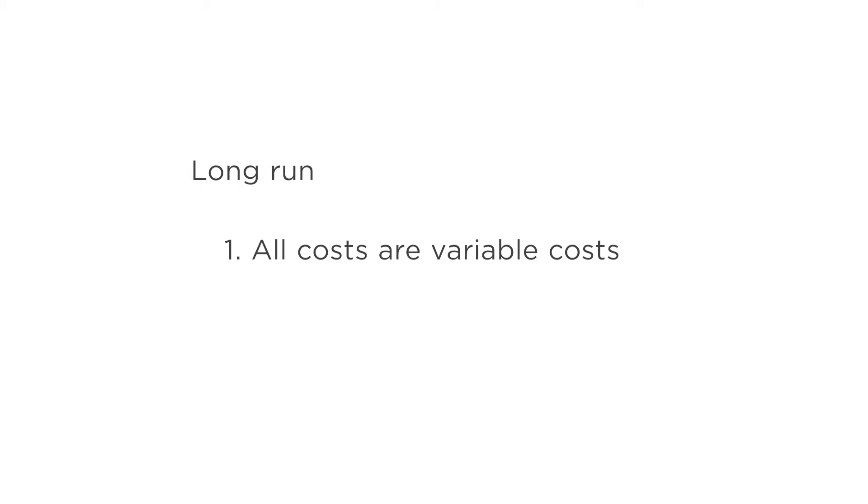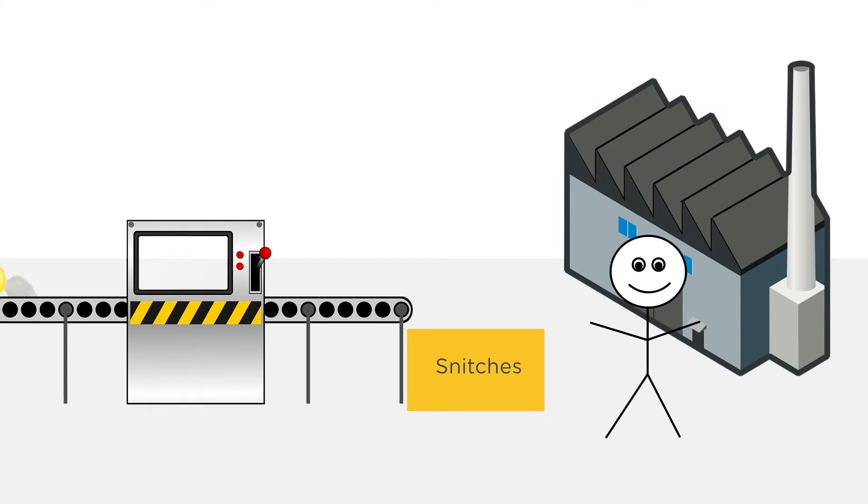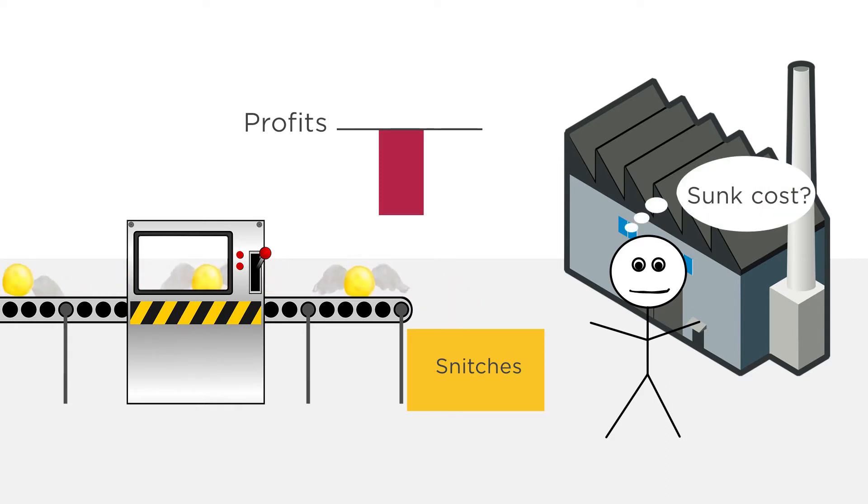With all costs variable, firms will never produce with negative profits. Remember from last lecture that in the short run, a firm might continue to operate even if it's losing money, since it has fixed costs that are sunk. But in the long run, with no fixed costs, we simply have to ask whether or not profits are greater than zero.